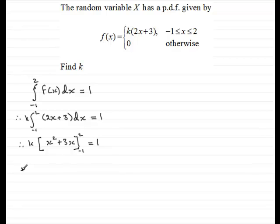Now I just substitute the limits in, so if we put x is 2 through here, we're going to have k multiplied by, well, 2 squared is 4 and 3 times 2 is 6. Then we subtract what we get when we put negative 1 through. Minus 1 squared is 1 and 3 times negative 1 is minus 3. And that equals 1.